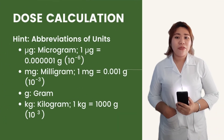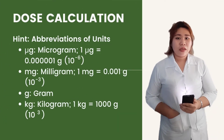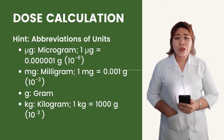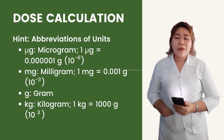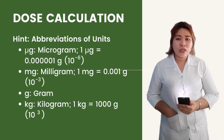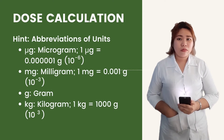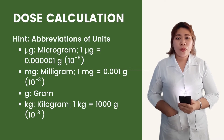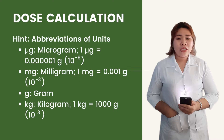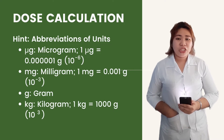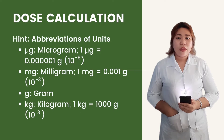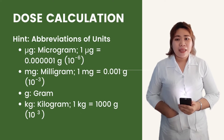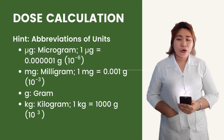Before we begin calculating doses, let us familiarize the abbreviation of units. First, we have micrograms. The symbol for the prefix is the Greek letter mu, which means small — this is why it is called microgram. And 1 microgram is equivalent to 0.000001 gram, or 10 to the negative 6 grams. Next, we have milligram. 1 mg is equal to 0.001 gram, or 10 to the negative 3 grams. Another abbreviation is the most well-known, the letter g, which stands for gram. Lastly, kg stands for kilogram.